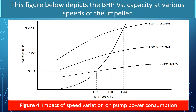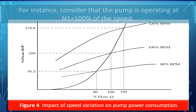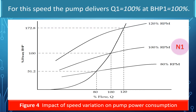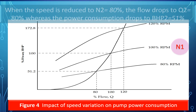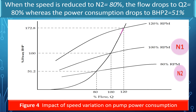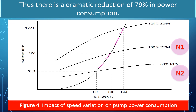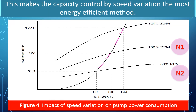This figure depicts BHP versus capacity at various impeller speeds. Consider the pump operating at n1 equal to 100% speed, delivering q1 equal to 100% at BHP1 equal to 100%. When speed is reduced to n2 equal to 80%, flow drops to q2 equal to 80%, while power consumption drops to BHP2 equal to 51%. When speed is further reduced to n3 equal to 60%, flow drops to q3 equal to 60%, and power consumption drops to BHP3 equal to 21.6%. Thus, there is a dramatic reduction of 79% in power consumption, making capacity control by speed variation the most energy efficient method.